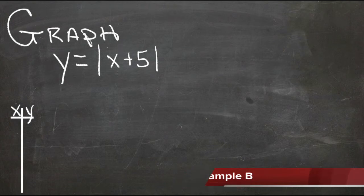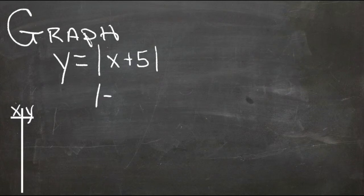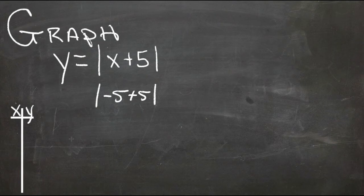Obviously if we need this to be 0 inside, and we're adding 5 to something, then we should make x negative 5. Then we'd have the absolute value of negative 5 plus 5, or the absolute value of 0, which is 0. So when x is negative 5, y is 0.